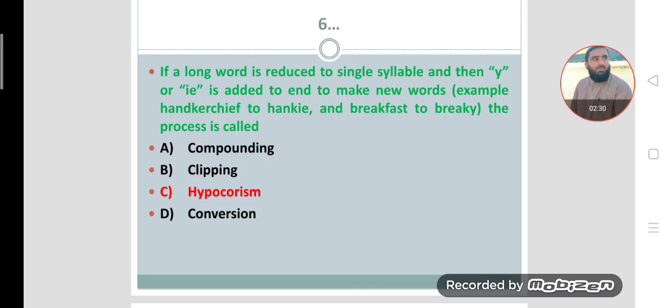Number six: If a long word is reduced to single syllable, and then Y, I, E is added to N to make new words. For example, handkerchief to hanky, we remove the last letters and then we add I, E. And breakfast to brekky. We remove fast from breakfast and then add Y. This process is called hypocorism. Option C is the correct option.